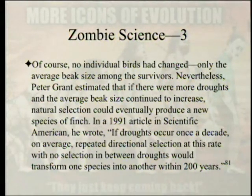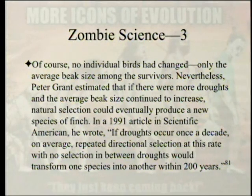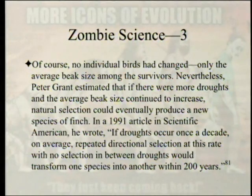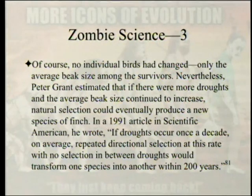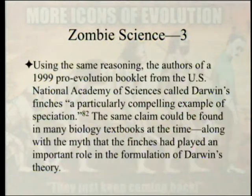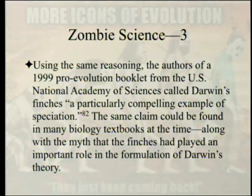Of course, no individual birds had changed — only the average beak size among survivors. Peter Grant estimated that if droughts occurred once a decade, repeated directional selection could transform one species into another within 200 years, as he wrote in a 1991 Scientific American article. Using the same reasoning, a 1999 pro-evolution booklet from the US National Academy of Sciences called Darwin's finches 'a particularly compelling example of speciation,' and the same claim appeared in many biology textbooks.